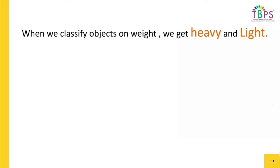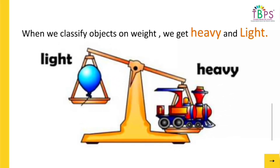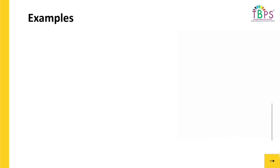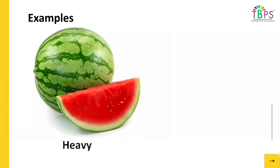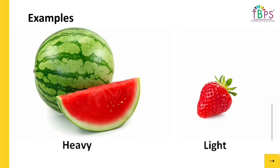When we classify objects on weights, we get heavy and light. Let's take a look at some examples. This watermelon is heavy, and the strawberry is light.